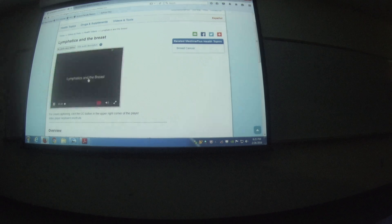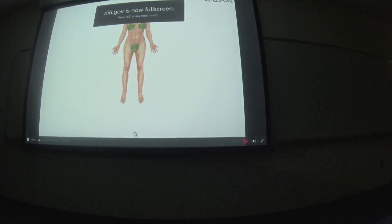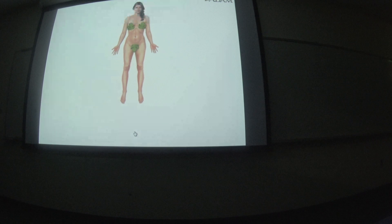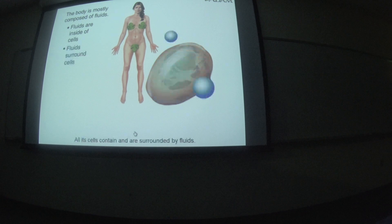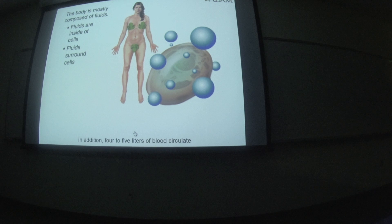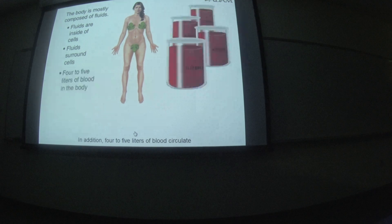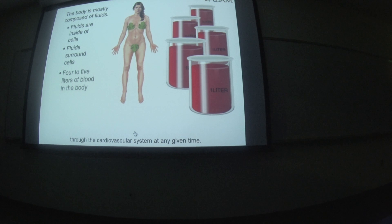The body is mostly composed of fluid. All its cells contain and are surrounded by fluid. In addition, four to five liters of blood circulate through the cardiovascular system at any given time.